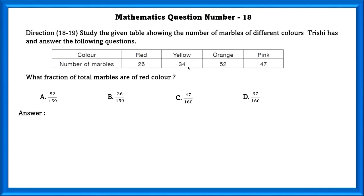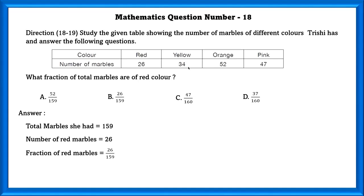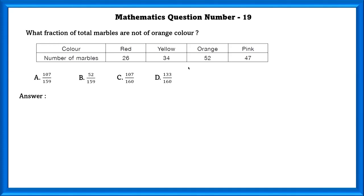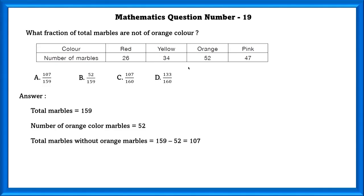Mathematics question number 18. Study the given table showing the number of marbles of different colors Trishy has. What fraction of total marbles are of red color? Total marbles she has is 159 and red marbles is 26, so the fraction is 26 by 159. What fraction of total marbles are not of orange color? Number of orange marbles is 52, so marbles without orange is 107. Fraction of marbles not of orange color is 107 by 159.